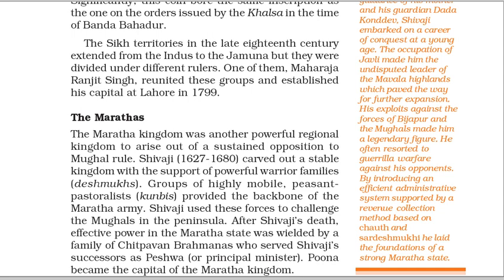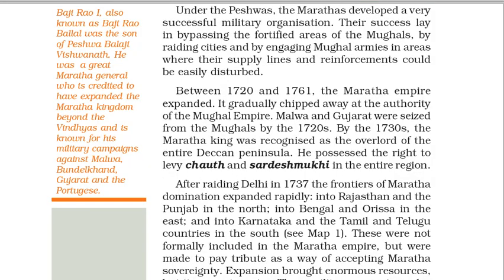The Marathas. The Maratha kingdom was another powerful regional kingdom to arise out of a sustained opposition to Mughal rule. Shivaji (1627–1680) carved out a stable kingdom with the support of powerful warrior families — Deshmukhs. Groups of highly mobile peasant pastoralists — Kumbis — provided the backbone of the Maratha army. Shivaji used these forces to challenge the Mughals in the peninsula. After Shivaji's death, effective power in the Maratha state was wielded by a family of Chitpavan Brahmanas who served Shivaji's successors as Peshwa, or principal minister. Pune became the capital of the Maratha kingdom. Under the Peshwas, the Marathas developed a very successful military organization. Their success lay in bypassing the fortified areas of the Mughals, raiding cities and engaging Mughal armies in areas where their supply lines and reinforcements could be easily disturbed.